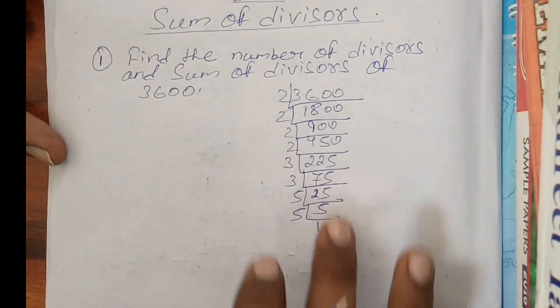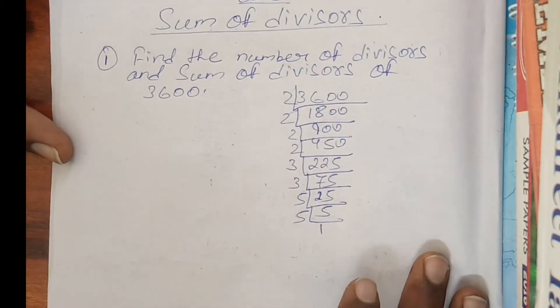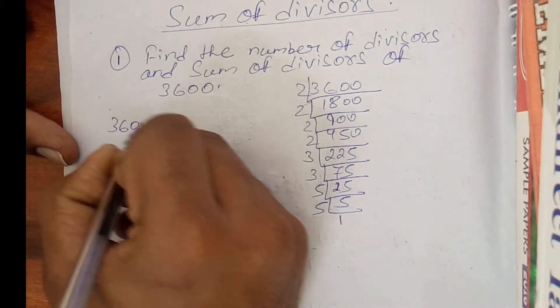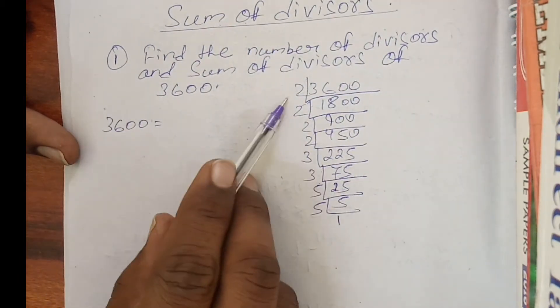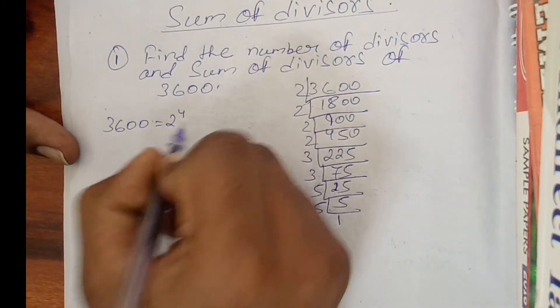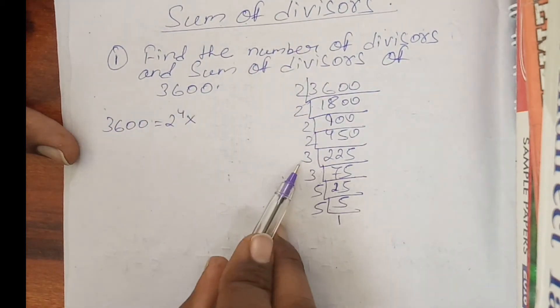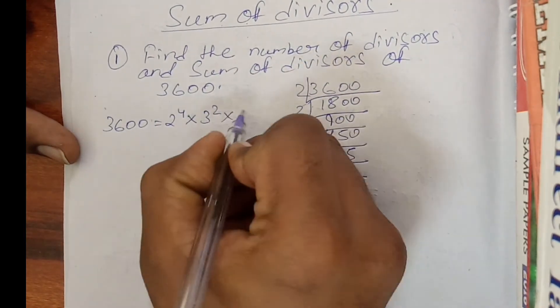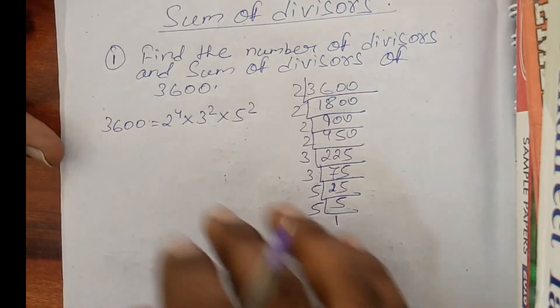So write this LCM in canonical form. How to write in canonical form? Just see here. 3600 is equal to... How many 2's are there? 1, 2, 3, 4. 2 to the power 4 times... How many 3's are there? 1, 2. 3 squared, and two 5's are there, times 5 squared. This is the canonical form.